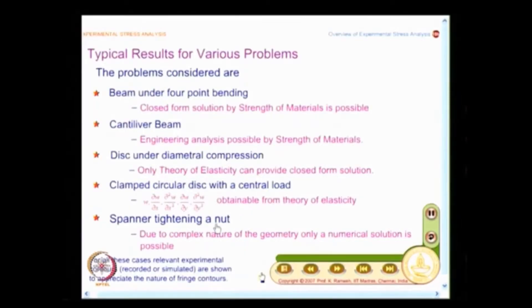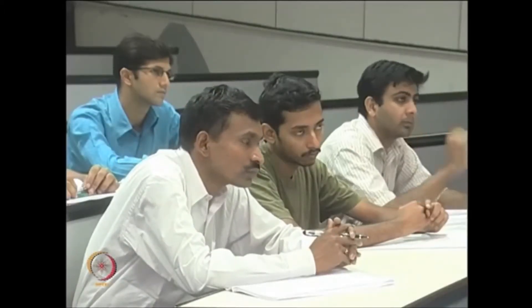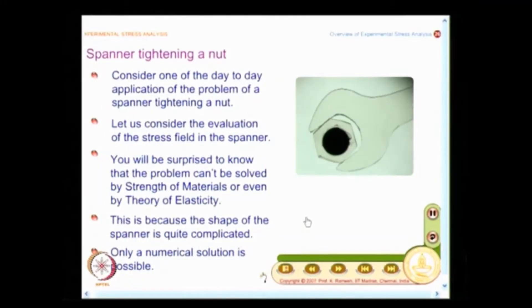As I had told you earlier, due to complex nature of the geometry, only a numerical solution is possible for this problem. And that is what we are going to see. And what I am going to look at is, we have already looked at day to day application of the problem and surprisingly, you do not have solution from strength of materials or even by theory of elasticity. This is primarily because the shape of the spanner is complicated and you cannot define the outer boundary in a convenient fashion for you to do a theory of elasticity solution. And in this case, only a numerical solution is possible.